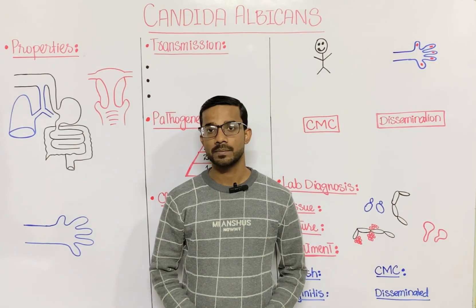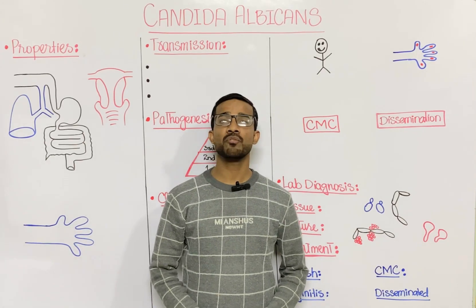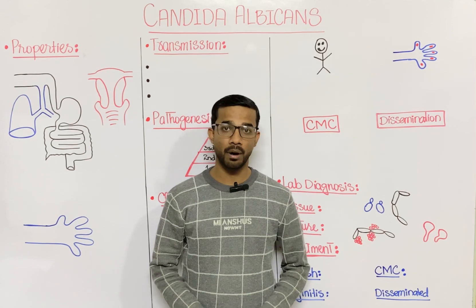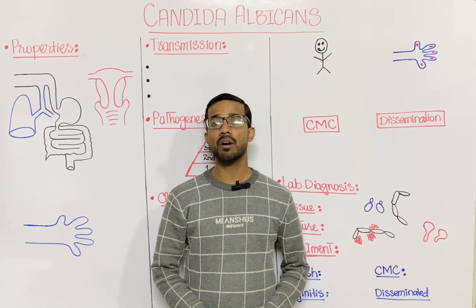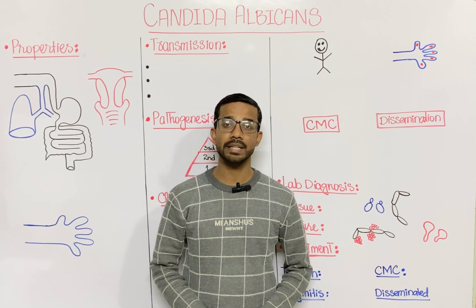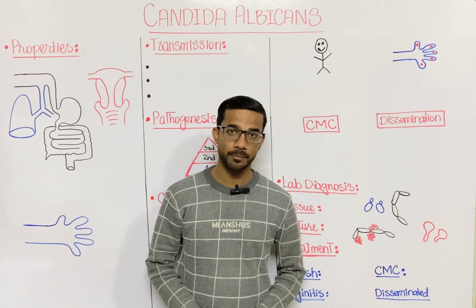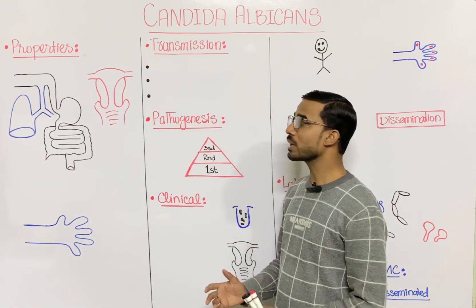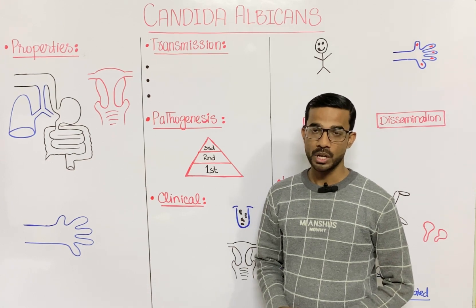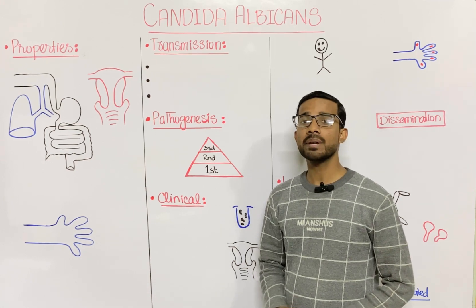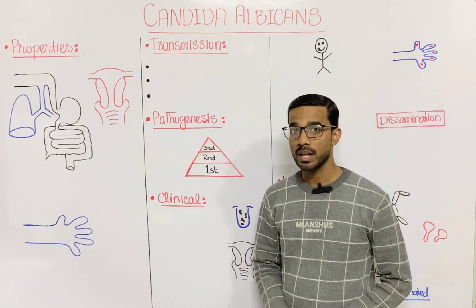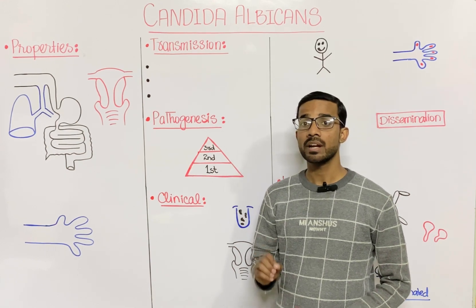Candida albicans is the most important fungus that causes different diseases in our body. In this lecture we are going to discuss the different aspects of Candida albicans. First, we will look at the general properties: Candida albicans is actually the normal flora of our body that resides on the skin and on the mucous membranes.